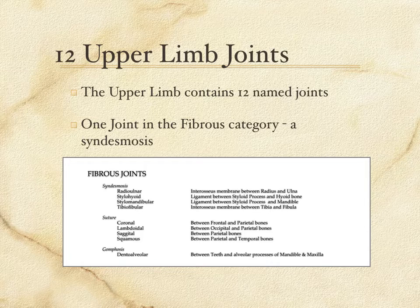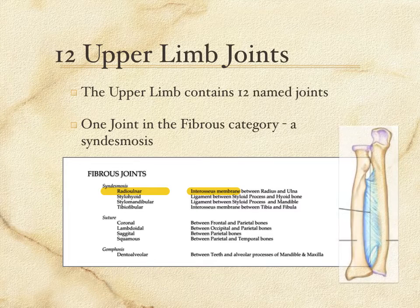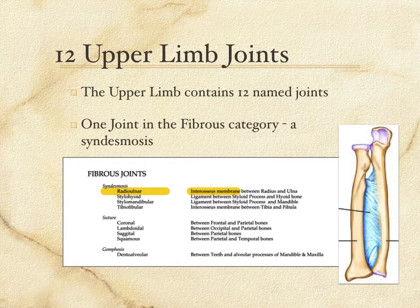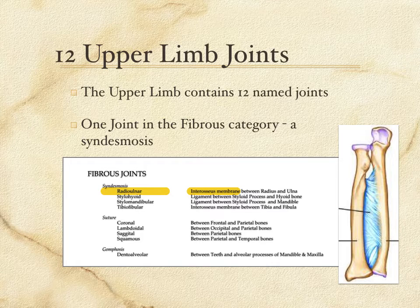That one fibrous joint is a syndesmosis — a joint that contains fairly large pieces of dense fibrous connective tissue. The two bones are known as the radius and the ulna, and the radial ulnar joint is the connective tissue between them. It's technically referred to as an interosseous membrane, and it joins the two bones from one end to the other, keeping them from coming apart. So the bones in your forearm are locked together by this, and this forms the joint between the two bones.